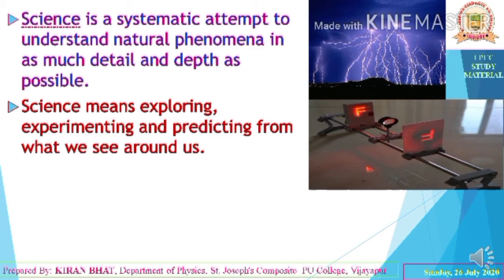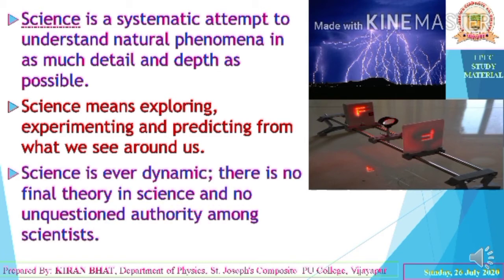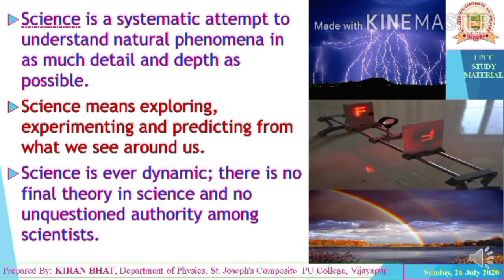Science is ever dynamic — there is no final theory in science and no unquestioned authority among scientists. For example, regarding the structure of the atom: initially Dalton's theory came, then J.J. Thomson's, then Rutherford's, then Bohr's atom model, then the vector atom model, and it continues. So science is ever dynamic with no final theory.